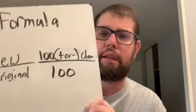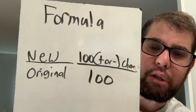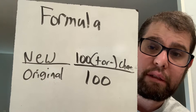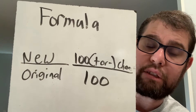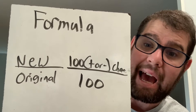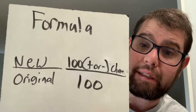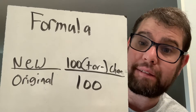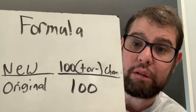I want to remind you that the formula we're going to be using to find a discount or markup price is a proportion. We're going to have the new price over the original price, then use the formula of a hundred plus or minus. Remember: if it's a markup or a tax we're adding; if it's a discount or sale we're subtracting, because the price is going to be cheaper. A markup or tax is going to be more expensive.